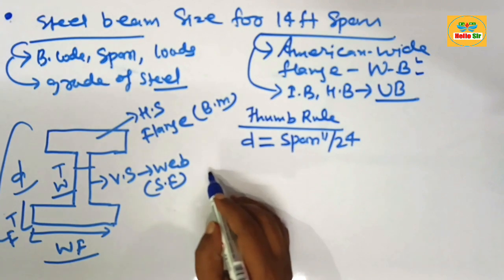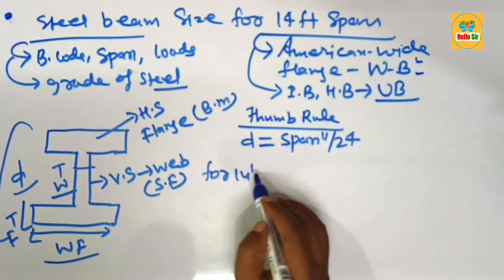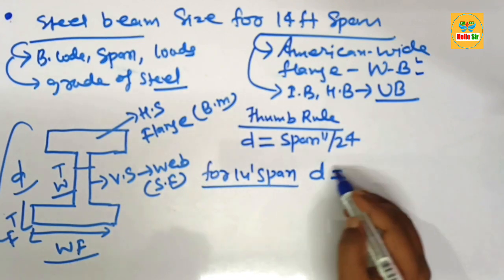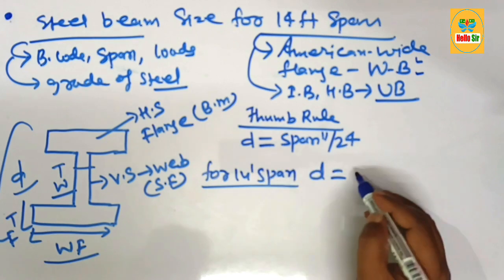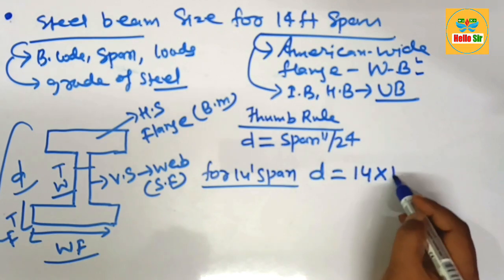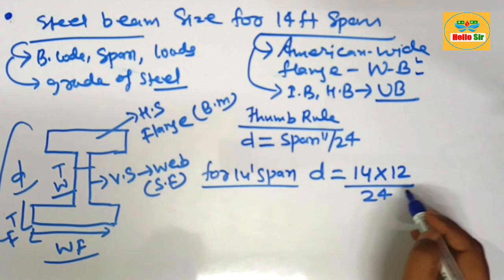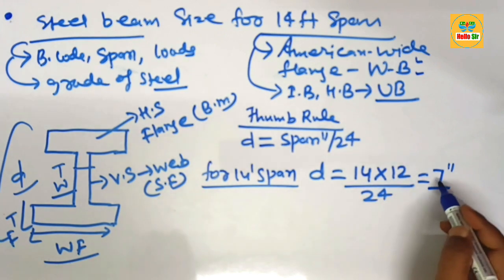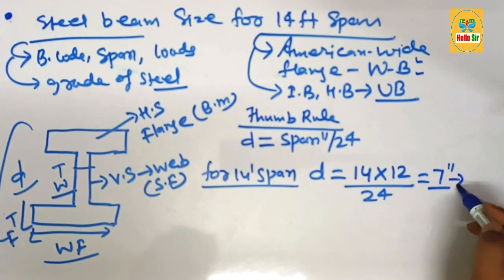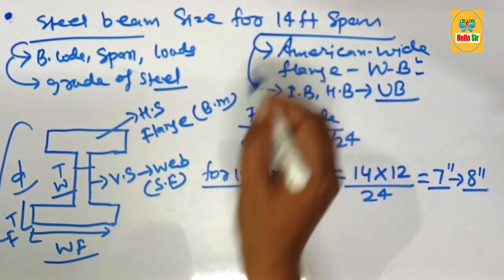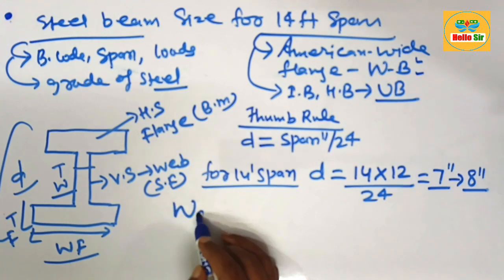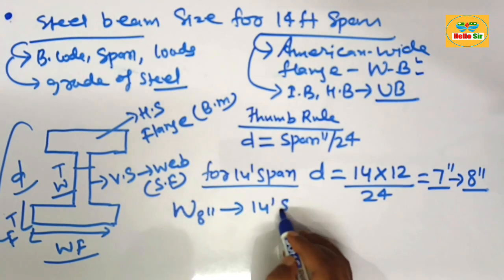For a 14-foot span, what should the depth be as per the thumb rule? Divide your span in inches by 24: multiply 14 by 12 and divide by 24. This comes out to about 7 inches. Since a 7-inch depth section is not available, it rounds up to an 8-inch depth section. That's why for a 14-foot span you need an American Wide Flange W8-inch beam.